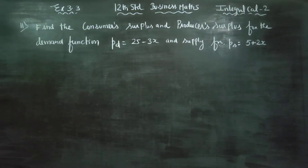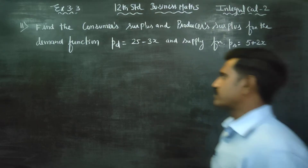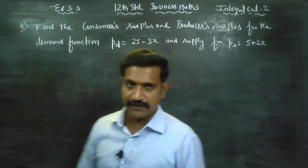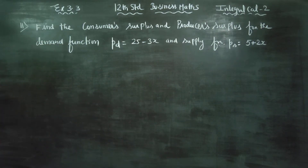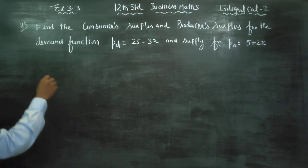Dear 12th Standard Business Math students, I am Etro Karanagaran. The last two problems of exercise 3.3 is sum number 11: Find the consumer surplus and producer surplus.